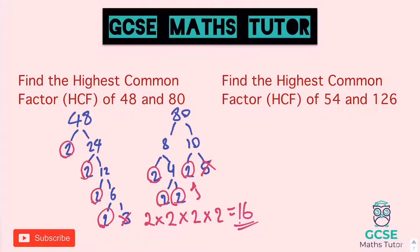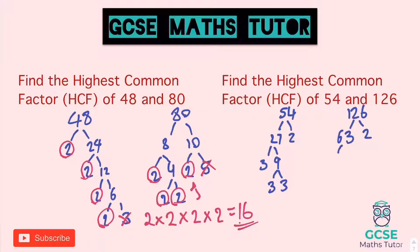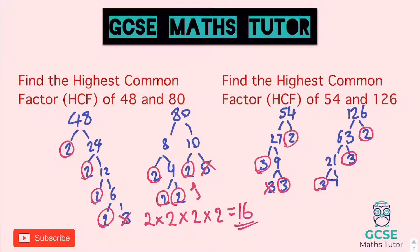Onto 54 and 126. Fifty-four is two times 27, 27 is three times nine, and nine is three times three. For 126: that's 63 times two, 63 is 21 times three, and 21 is three times seven. What's in both? There's a two in both, a three in both, and another three in both. But 54 has an extra three and 126 has an extra seven — we don't want those. So the shared factors are 2 × 3 × 3. Two times three is six, times three again is 18. Highest common factor is 18.